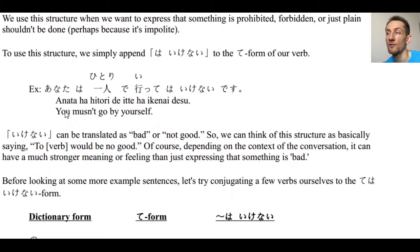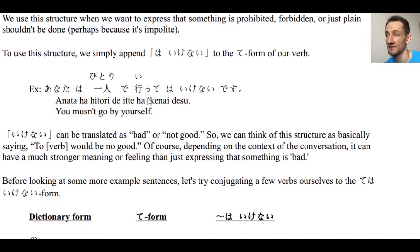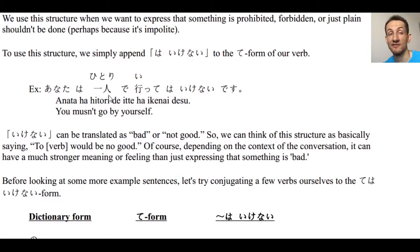Here we have an example sentence using te wa ikenai: Anata wa hitori de itte wa ikenai desu — you mustn't go by yourself. Itte wa ikenai means should not go or must not go by yourself.